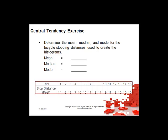Looking at the stopping distances again — pause the video and determine the mean, median and mode for the bicycle stopping distances used to create the histograms. Don't forget: the mean is the average, the median is the 50th percentile, and the mode is the highest frequency of occurrence.